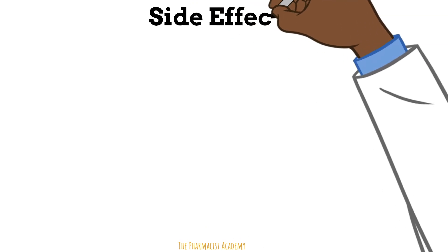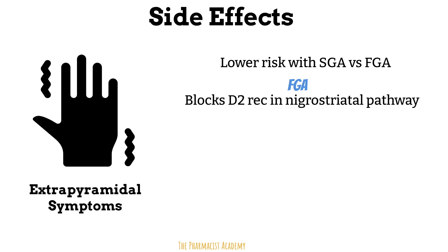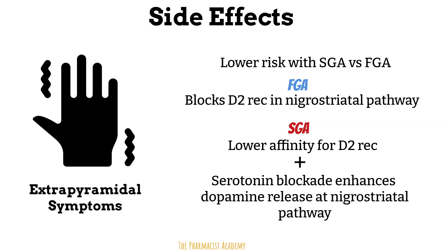Now let's assess the side effects and how they compare to first generation antipsychotics. First, EPS — characterized by tremors, rigidity, bradykinesia or slowness of movement, and tardive dyskinesia, which are involuntary repetitive movements. Second generation antipsychotics have been shown to have a lower risk of EPS compared to first generation antipsychotics because of the mechanism of action. The first generation antipsychotics can block the D2 receptor in the nigrostriatal pathway, which causes EPS. With second generation antipsychotics, they also block D2 receptors in the nigrostriatal pathway, but because they have a lower affinity for the D2 receptors, the resulting effect is much lower. With the additional serotonin blockade, we actually see an increased level of dopamine in the nigrostriatal pathway, overall leading to lower risk of EPS.